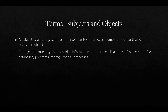Subjects and objects are terms that appear in information security and cybersecurity textbooks. A subject is a person, software process, or computer that can access an object. An object is an entity that provides information to a subject — such as files and database programs. What we're trying to do in access control is control that relationship between subjects and objects.